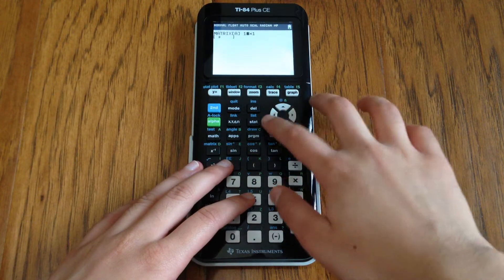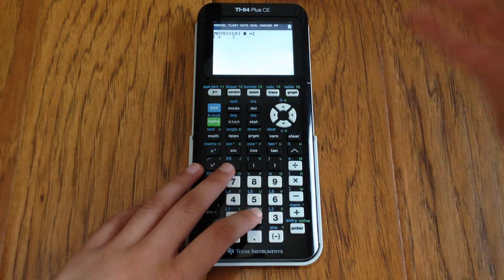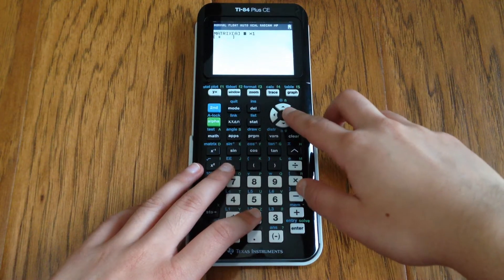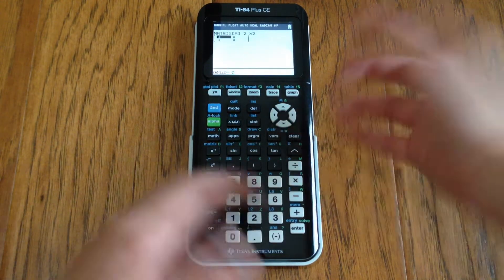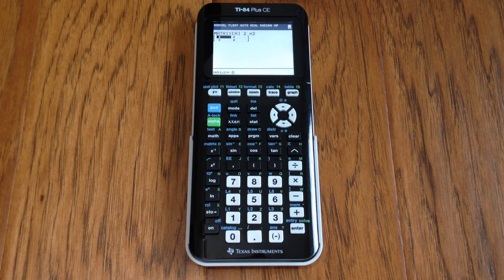Now that you're here you can edit the dimensions of the matrix. So here we can go with 2 by 2 and a 2 by 2 matrix will show up.